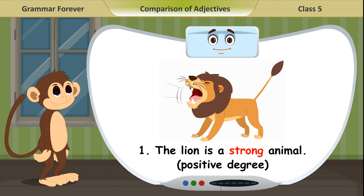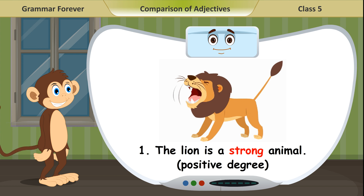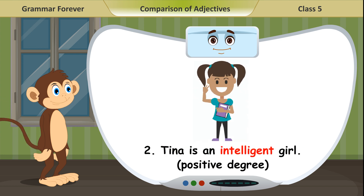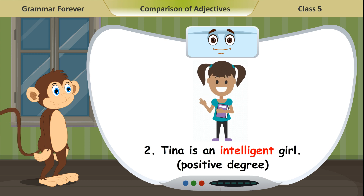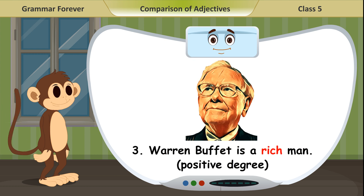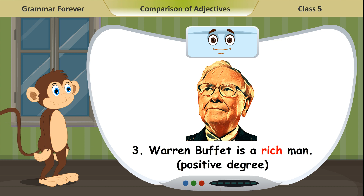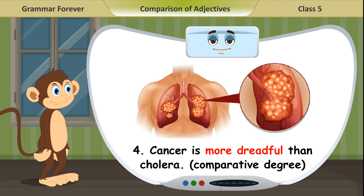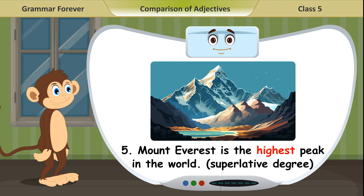Examples: 1. The lion is a strong animal — positive degree. 2. Tina is an intelligent girl — positive degree. 3. Warren Buffet is a rich man — positive degree. 4. Cancer is more dreadful than cholera — comparative degree. 5. Mount Everest is the highest peak in the world — superlative degree.